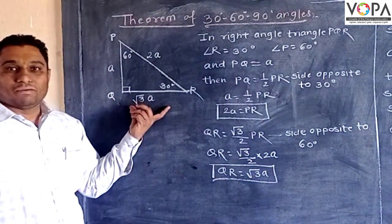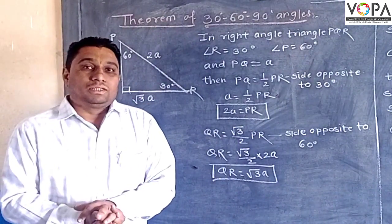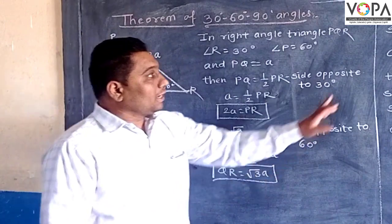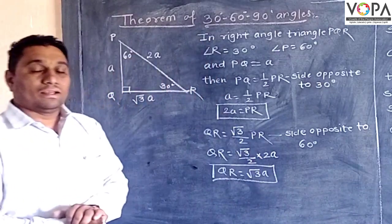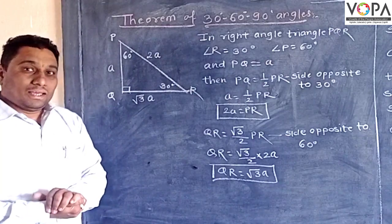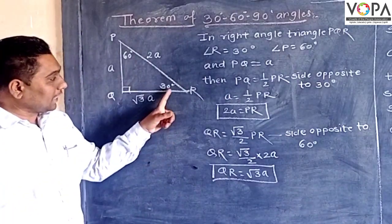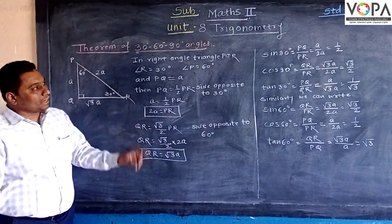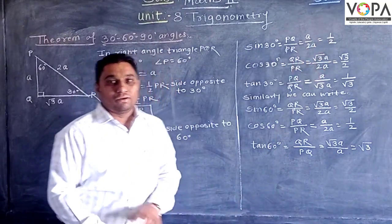So the value of QR is √3a. Now let us see how the ratios come out from these values. If we put that is sine 30 degree angle — for sine 30 degree we know that the sine of any angle is the opposite side upon the hypotenuse. So sine of 30 degree: opposite side is PQ and hypotenuse is PR. So PQ upon PR is a upon 2a, which is equal to 1/2.